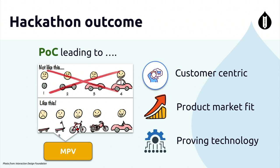GovHack also follows this approach — specifically the second model. A single project can solve four or five challenges published in GovHack, so the first challenge might be the skateboard-level MVP, then they tag the project with another challenge and another, and this way the whole product creates multiple solutions for multiple challenges. One project solves multiple challenges.